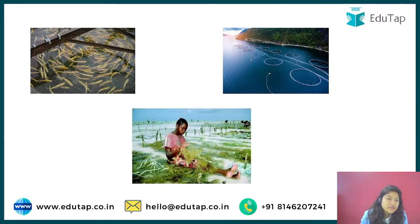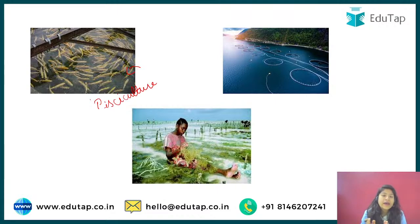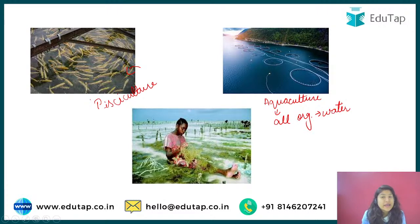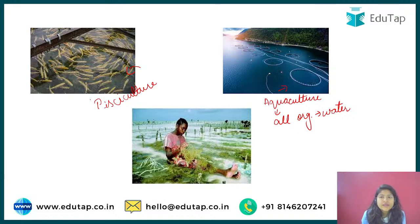Let's understand the different options. First is pisciculture — in pisciculture we focus only on fishes. The term 'pisci' refers to fish. We cultivate them in an artificial environment, not in their natural rivers or water bodies. Next is aquaculture — 'aqua' means water, so here we are talking about all organisms present in water. The difference is: in pisciculture we solely focus on fishes, while in aquaculture we include all aquatic organisms.